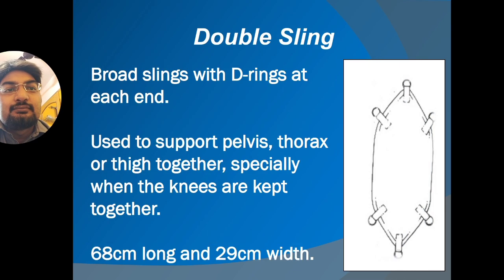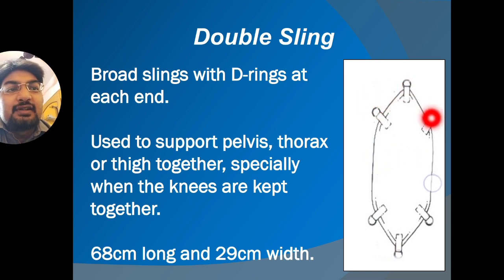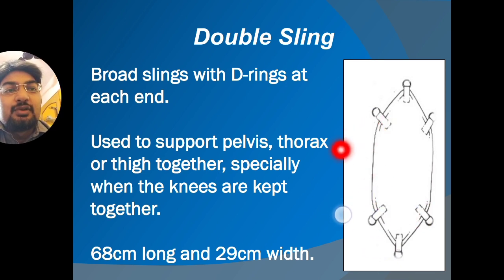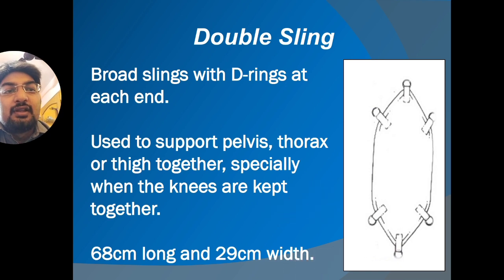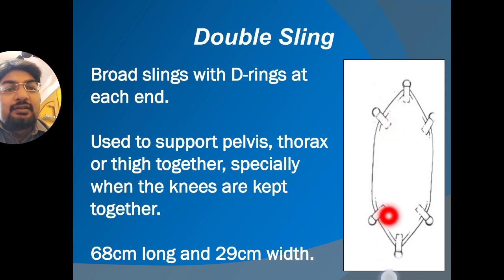The double sling is a broad sling with D-rings at each end, used to support larger body parts like the pelvis, thorax, or thighs — especially when the knees are kept together. Its length is 68 centimeters and width is 29 centimeters.